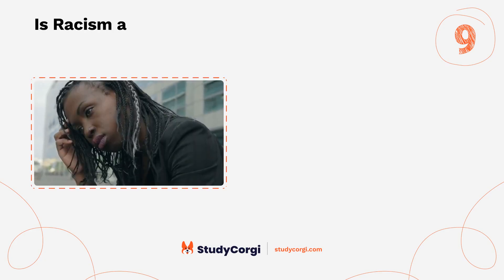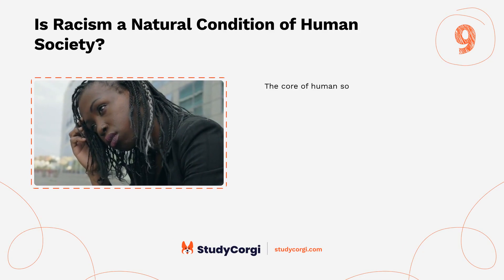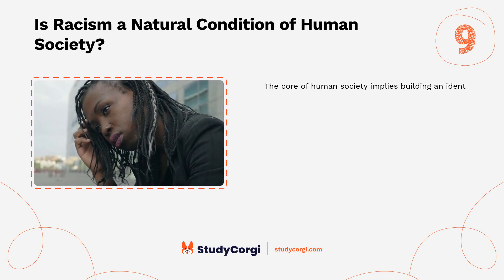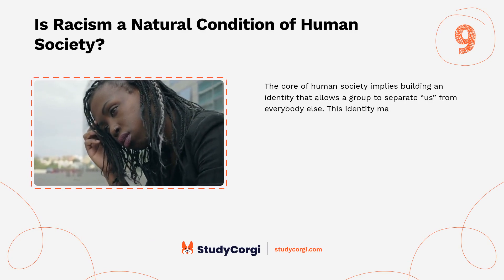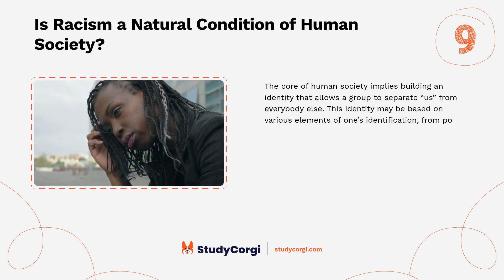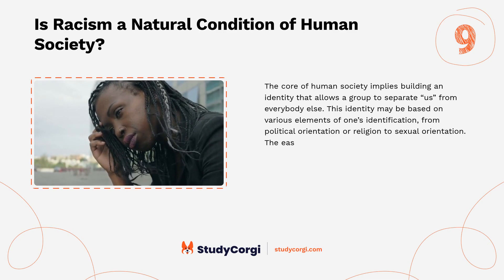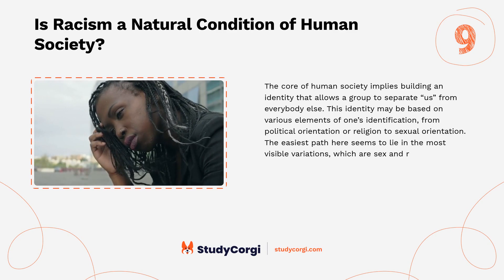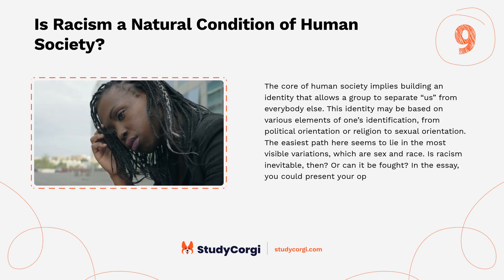Is Racism a Natural Condition of Human Society? The core of human society implies building an identity that allows a group to separate itself from everybody else. This identity may be based on various elements of one's identification, from political orientation or religion to sexual orientation. The easiest path here seems to lie in the most visible variations, which are sex and race. Is racism inevitable, or can it be fought? In the essay, you could present your opinion on the topic.